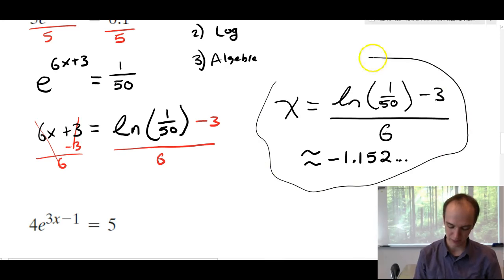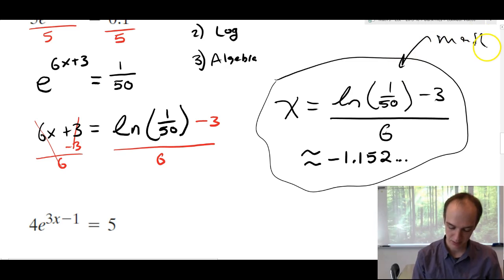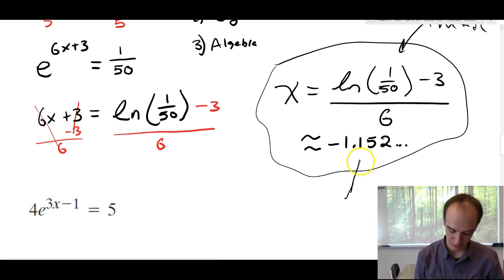So, I'll say approximately negative 1.152 dot dot dot. Which of these you'd prefer, either of these would be okay as a final answer. In a math problem, we'd probably prefer this one. If this was a word problem or a story problem, you might prefer the decimal answer because you might want to attach some units to it. But that depends on the problem you do.